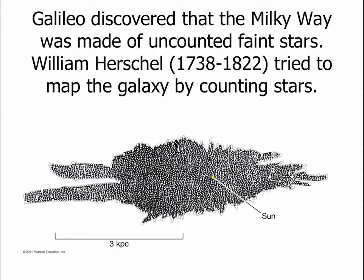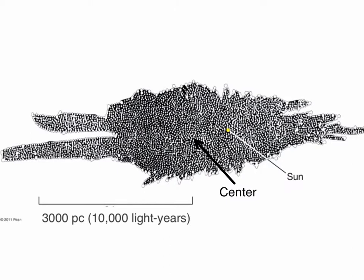The first person to try and measure the size of the Milky Way and map it out was a British astronomer by the name of William Herschel. The way he tried to map out the galaxy was just by counting the number of stars in every direction. He figured if there were more stars in a given direction then the galaxy was bigger in that direction. And that would work if there's nothing to block the starlight. This is sort of the map of the galaxy he got.